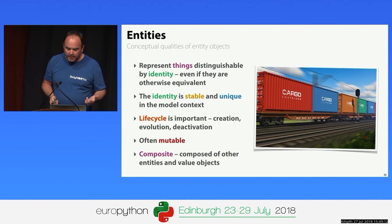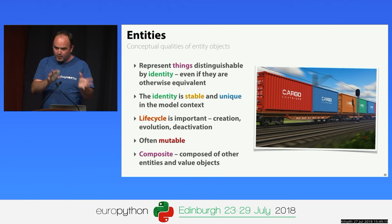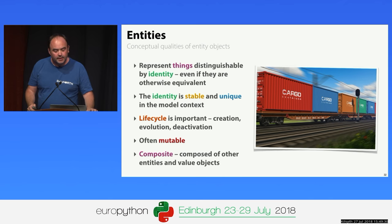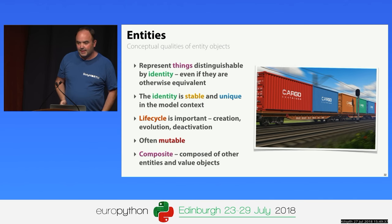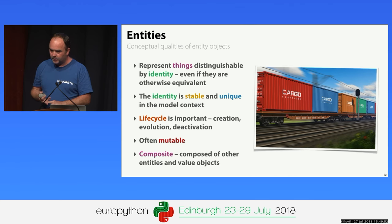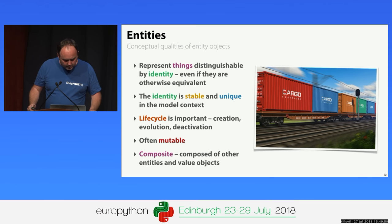Let's move on to entity objects, which are the next level of sophistication. Entities are different because they represent things that are distinguishable by identity. Even if they are completely equivalent in value, the fact that one is a different instance is an important thing. The identity needs to be stable over time — an entity object cannot change its identity. It needs to be unique within the bounded context. For entities, life cycle is important: when the entity is created, how it evolves over time, and when it is deleted or deactivated.